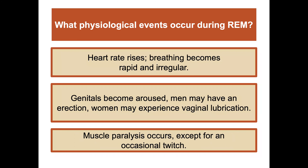What are the physiological events that occur within your body during REM? Heart rate rises, breathing becomes rapid and irregular, genitals may become aroused, and muscle paralysis occurs except for an occasional twitch. So your body is really not able to move much, except for an occasional twitch, even while having those very vivid, fantastical dreams.